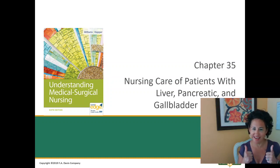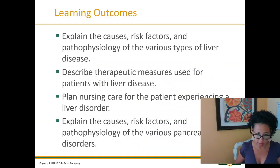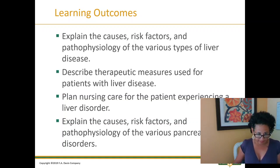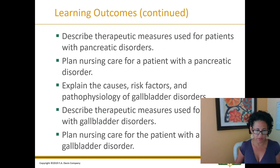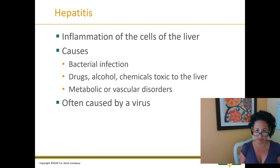Chapter 35. Here are your learning outcomes — review and look over those. Hepatitis is inflammation of the cells of the liver. This can be caused by bacterial infection, drugs, alcohol, chemical toxins to the liver, metabolic or vascular disorders. It can be a combination or one or the other, and is often caused by a virus.